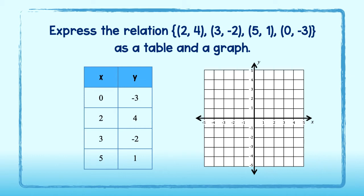Now we can graph each point. Remember, each pair of values can be viewed as an ordered pair. We will graph zero, negative three right here, followed by two, four, three, negative two, and five, one. Perfect! You have now modeled a relation as both a table and a graph.